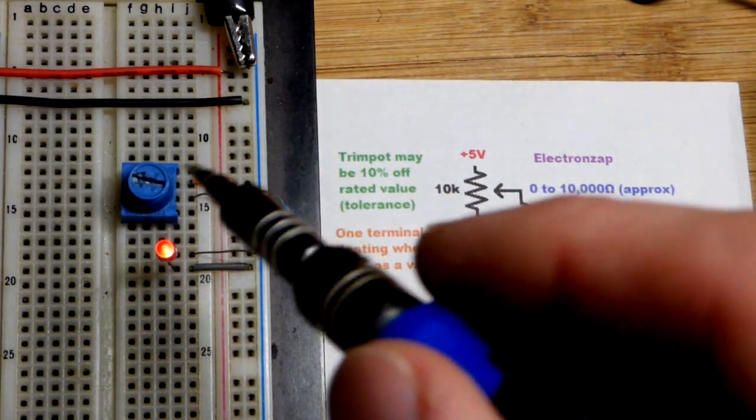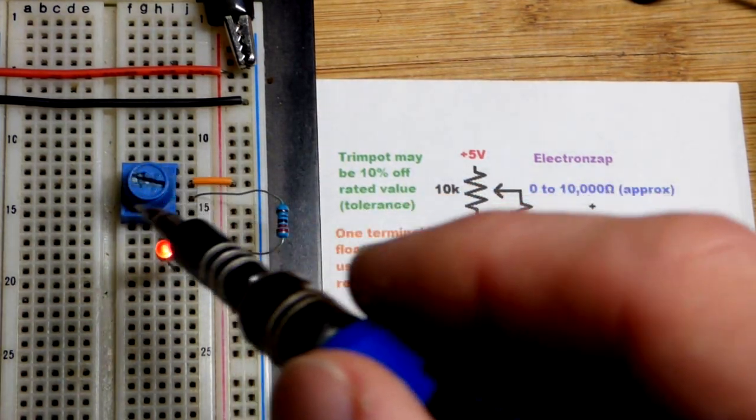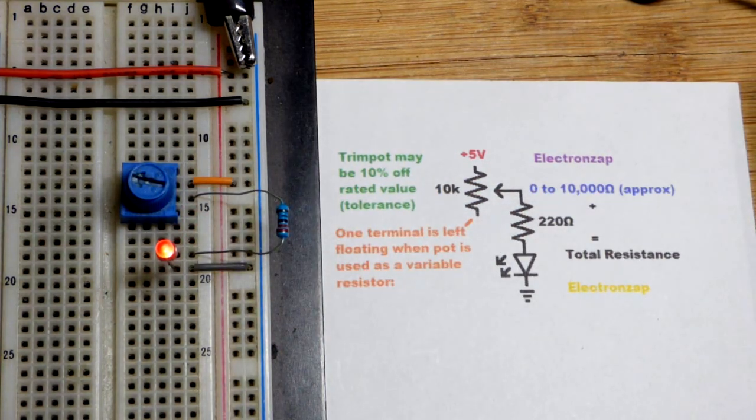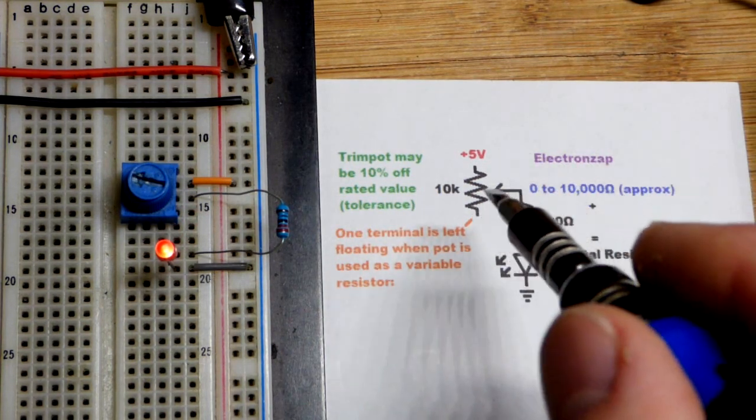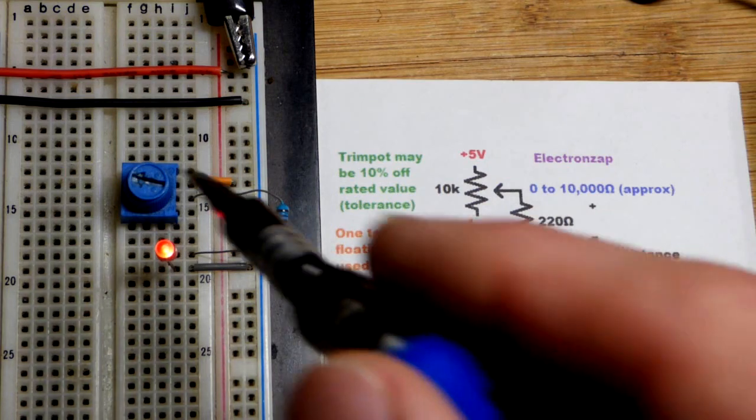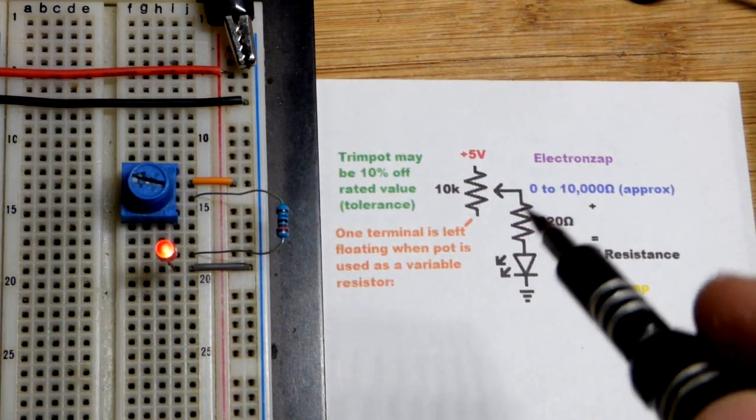So you can put a voltage across the trim pot there, and it will give you a percentage of that voltage, depending on how far along the wiper is turned. Of course, that's not meant to power stuff, which will also throw off the voltage, but we're not going to worry about that in this video.